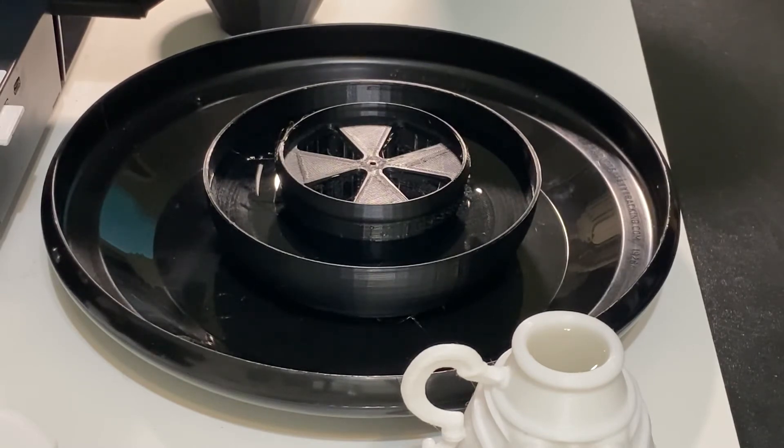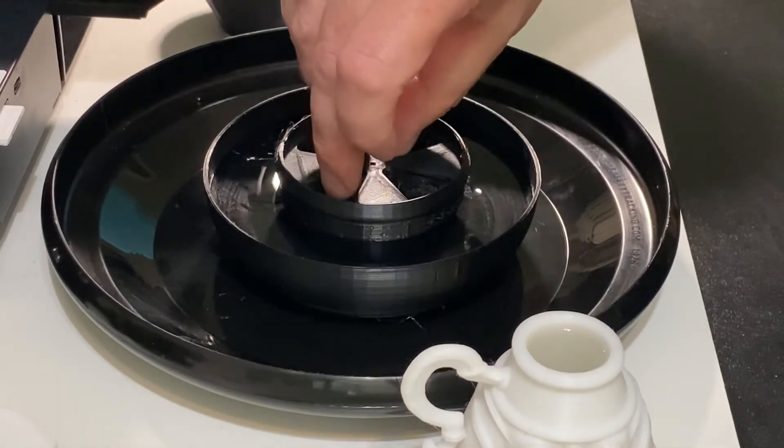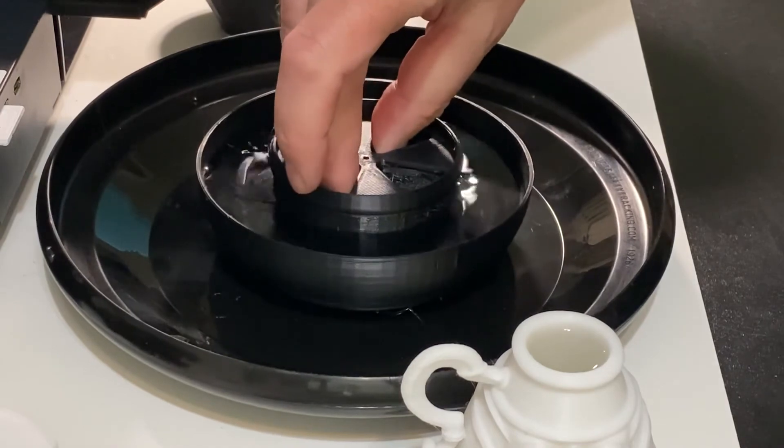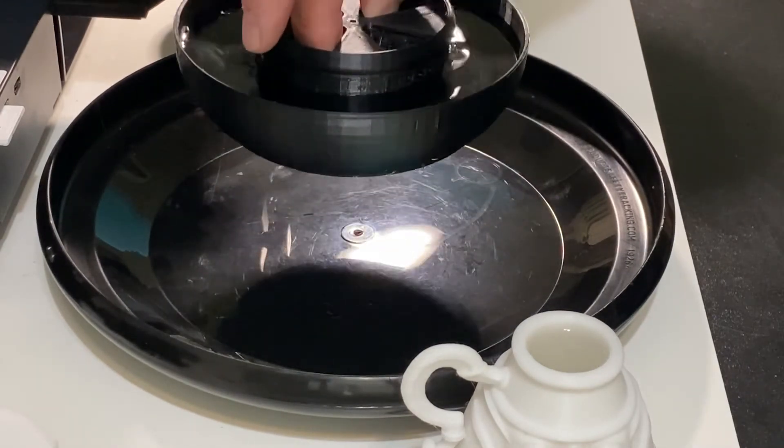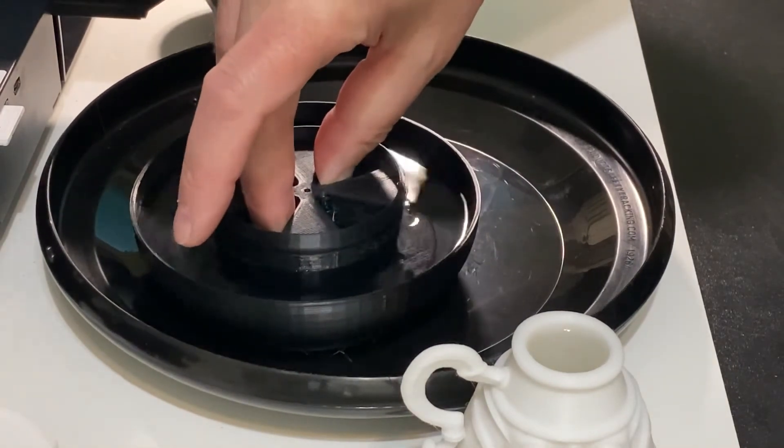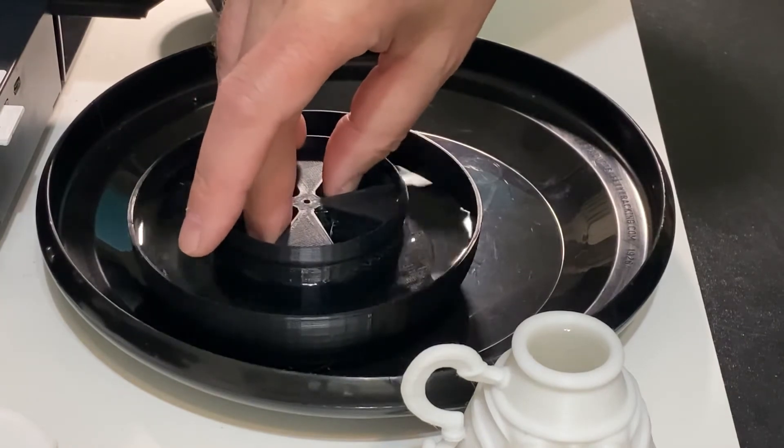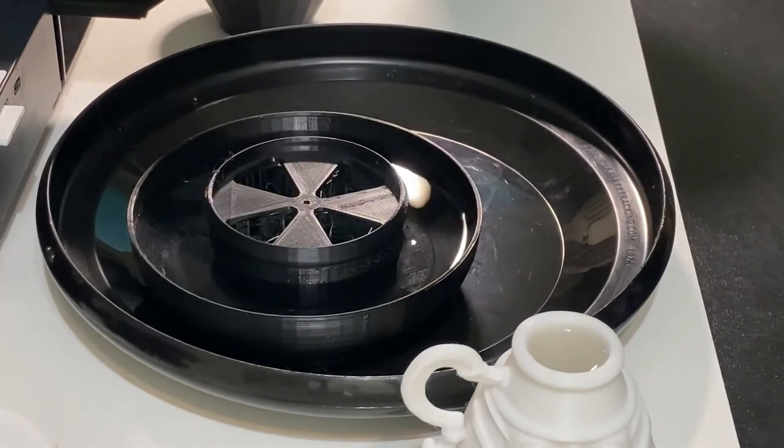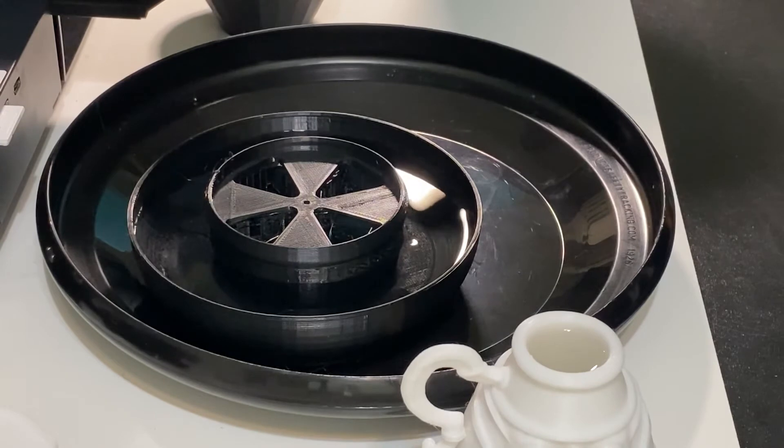So even with a little more complex object that had outside walls and inside walls, I'm not seeing any leakage. Very interesting.